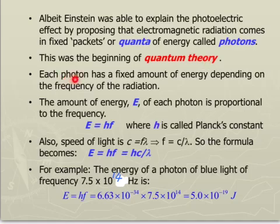Each photon, or each packet of light, has a fixed amount of energy, depending on the frequency of the radiation. The amount of energy E of each photon is proportional to its frequency. So the formula is E equal to H times F. H is a constant called Planck's constant, it's got a fixed number.